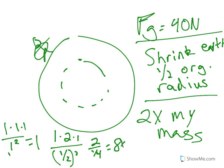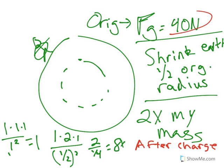So if I wanted to know what is the new force of gravity, the original force of gravity was 40 newtons. So the new force of gravity after changes would be 40 here times eight. So eight times 40 is equal to 320 newtons. So after I changed my mass, doubled it, shrunk the earth to one half its original radius, I would get 320 newtons as my weight.